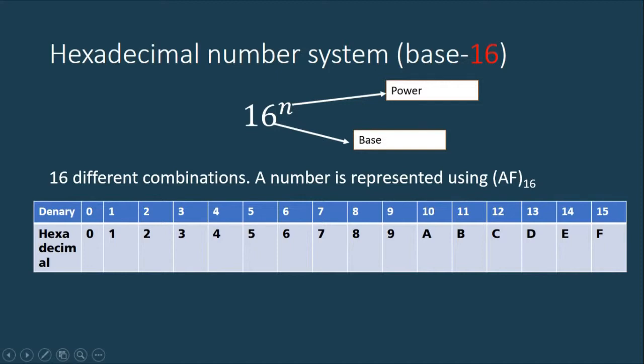A number is represented, a hexadecimal number is represented. It is written as bracket AF base 16. So you always need to check the base to know which number system we're using. Now 16 different combinations are used. For example, a denary number 0 in hexadecimal is represented as 0. This will be from 0 to 9. These are represented using normal numbers.